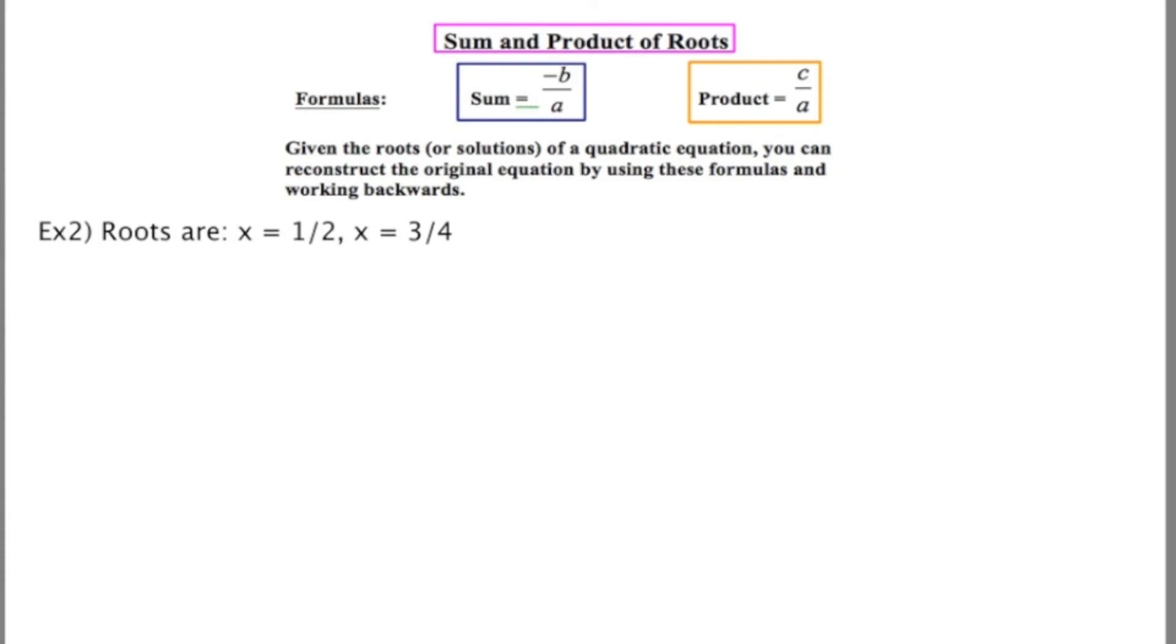In example 2, the roots that I give you are a little more complicated because they're fractional. Let's take a look at how to use the sum and product of roots to go backwards and come up with the original quadratic equation. Starting with the sum, the sum is going to be the adding of these two roots, 1 half plus 3 fourths. To add fractions, you should have a common denominator, so I'm going to rewrite 1 half as 2 fourths. I get a sum of 5 fourths, which I'm going to set equal to negative b over a.